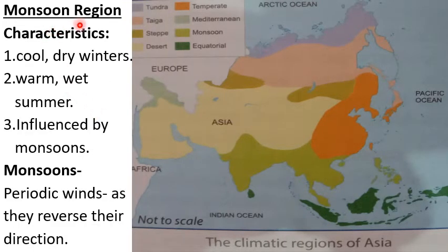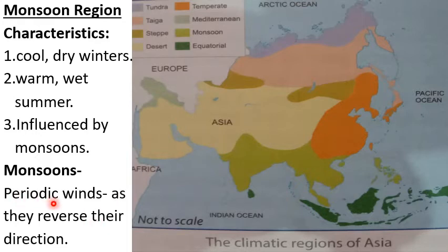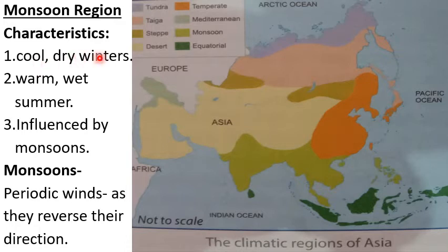Monsoon region. The monsoon region is shown on the map with green color. This region is affected by monsoon winds. Monsoons are periodic winds, also known as seasonal winds, because they reverse their direction after 6 months. The characteristics of the climate are cold, dry winters — meaning no rainfall during winter season — and warm, wet summers.